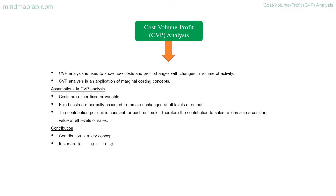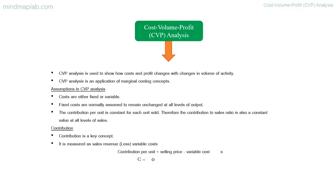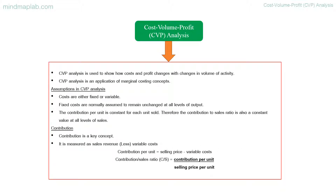Contribution is a key concept. It is measured as sales revenue less variable costs. Contribution per unit is equal to selling price minus variable costs. The contribution to sales (CS) ratio equals contribution per unit divided by selling price per unit.